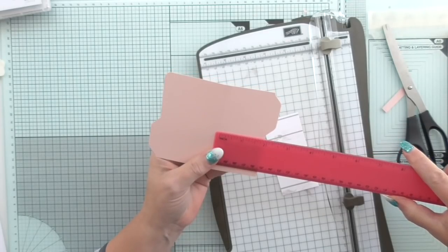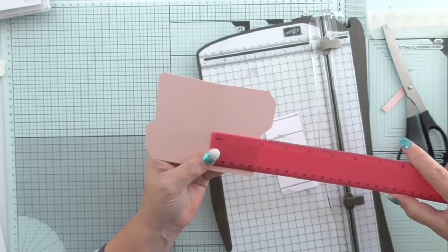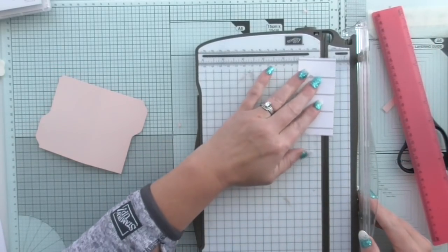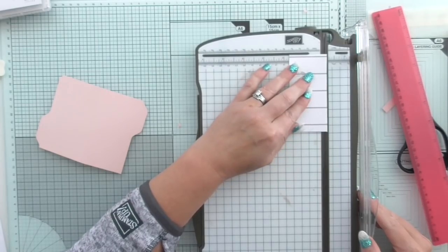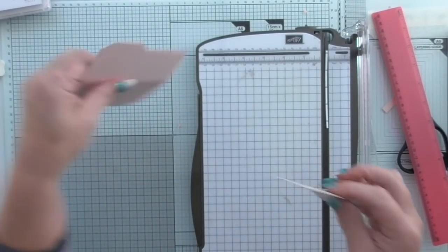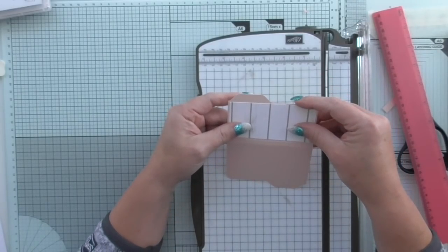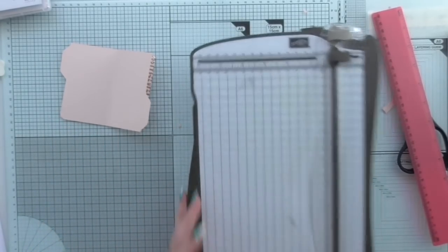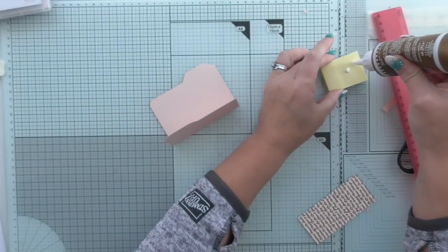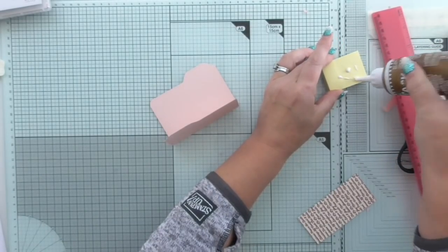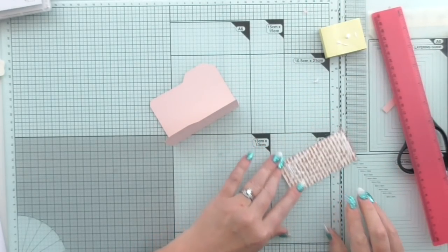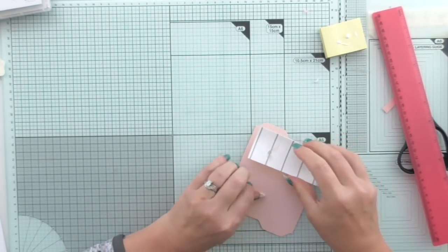So we've got three and seven eighths by one and three quarters. I'll leave the measurement on my blog and we're just going to stick that on there now with my glue. Really cute project when it's done. You're going to love it. You're going to want to make a billion of them. I'm going to layer that on there.